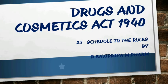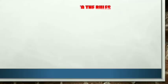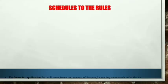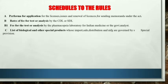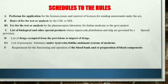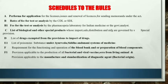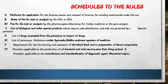In the Drug and Cosmetics Act there are 23 schedules to the rules and two schedules to the act. In the first slide we are discussing Schedule A to F1 in schedules to the rules.